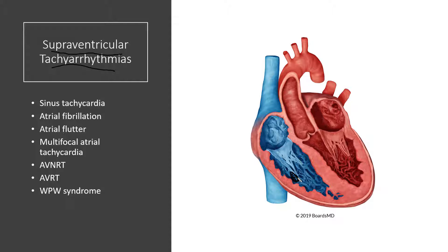Examples of supraventricular tachycardias include sinus tachycardia, atrial fibrillation, atrial flutter, multifocal atrial tachycardia, AVNRT, AVRT, and Wolff-Parkinson-White syndrome. However, for the purposes of this module, we are going to focus on atrial fibrillation.